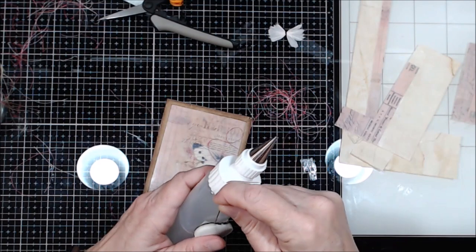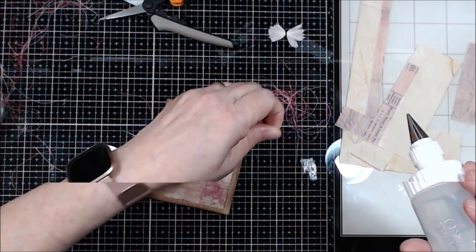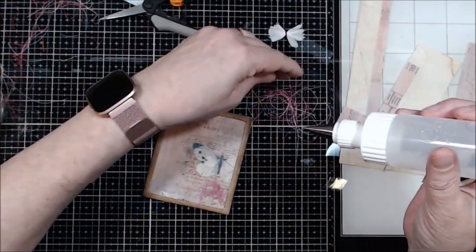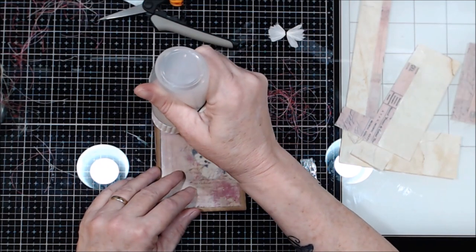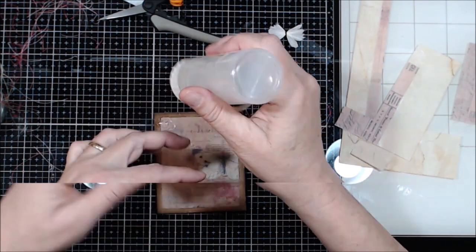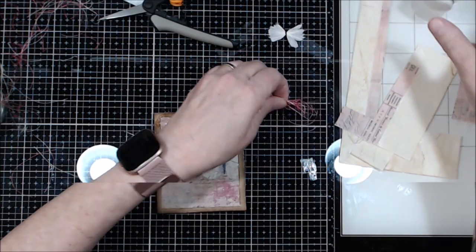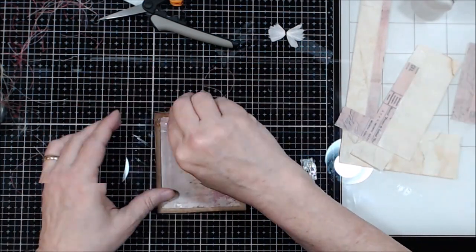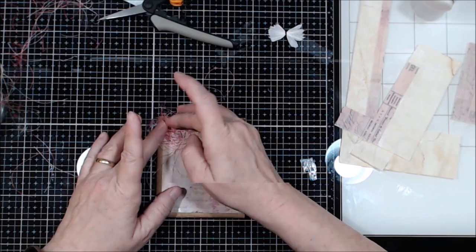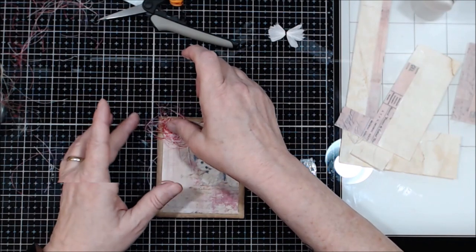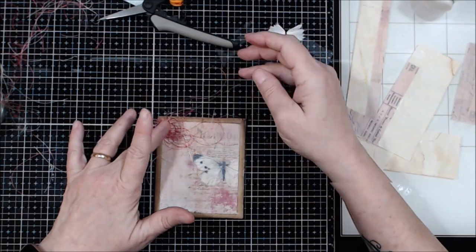What I'm going to do is I am just going to take Fabri-Tac, make a little circle of it. I'm going to take all of this, wad it up, and just stick it on there. Big old wad of string, you will.